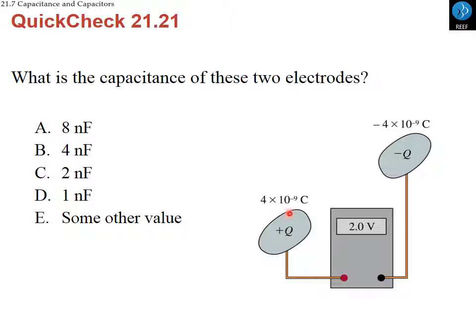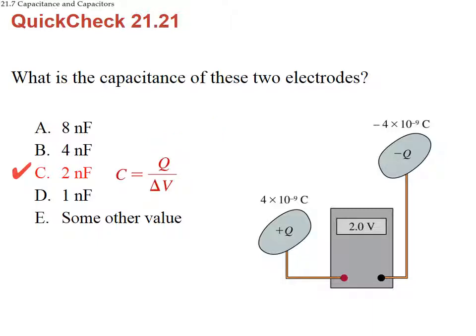Here is a clicker question: two objects are charged to plus and minus 4 nanocoulombs, and the electric potential difference between them is 2 volts — a 2-volt battery was used to charge them. What is the capacitance? We calculate the charge divided by the voltage: 4 times 10 to the minus 9 coulombs divided by 2 volts gives us 2 nanofarads.